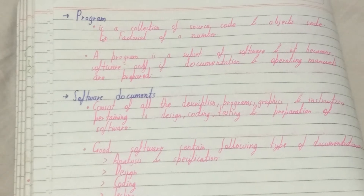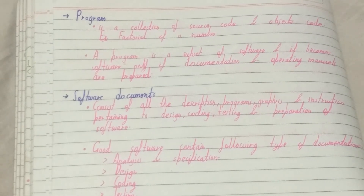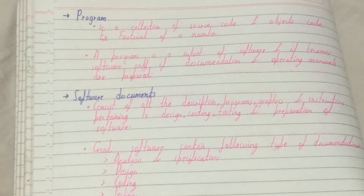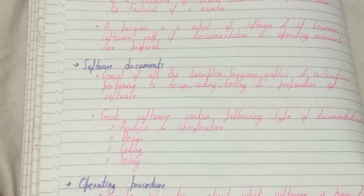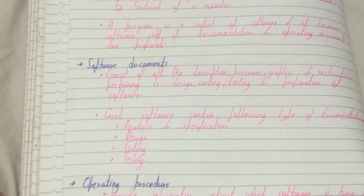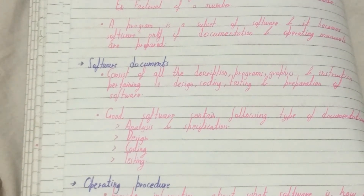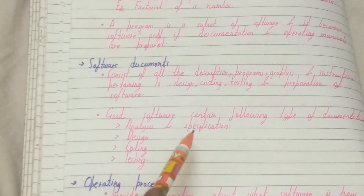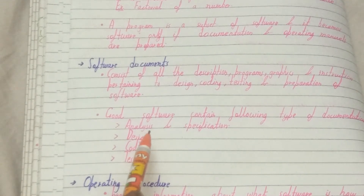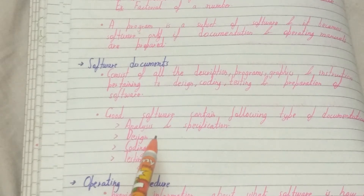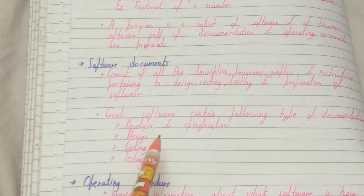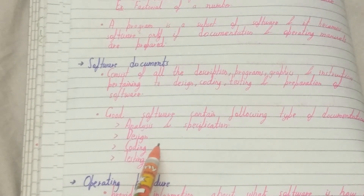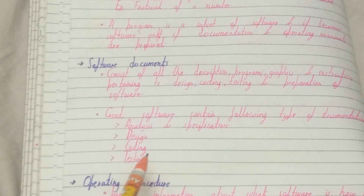Whenever we are designing a software, we always aim to design a good software. So what does good software documentation involve? First is analysis of the user requirements — how the user wants the software to be — and making a specification of that analysis. Then designing, with documentation of how the software will be designed, and on that basis the coding is done and documentation of coding is also done, along with the testing part, which tells about the reliability of the software.